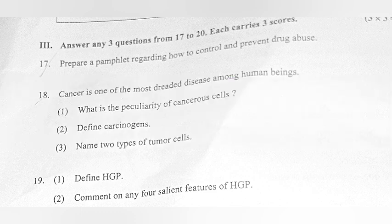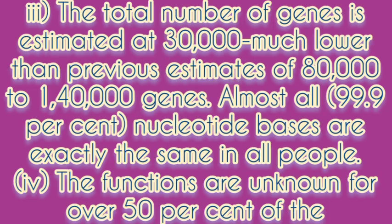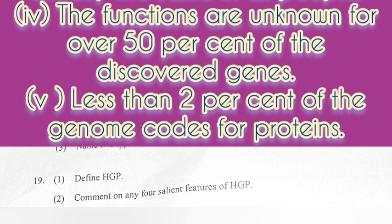Question 19. Part 1: Define HGP. Answer: Human Genome Project. Part 2: Comment on any four salient features of HGP. Answer: 1. The human genome contains 3164.7 million base pairs. 2. The average gene consists of 3,000 bases, but size varies greatly, with the largest known human gene being dystrophin at 2.4 million bases. 3. The total number of genes is estimated at 30,000, much lower than previous estimates of 80,000 to 1,40,000 genes. 4. Almost all nucleotide bases are exactly the same in all people. 5. The functions are unknown for over 50% of the discovered genes. 6. Less than 2% of the genome codes for proteins.